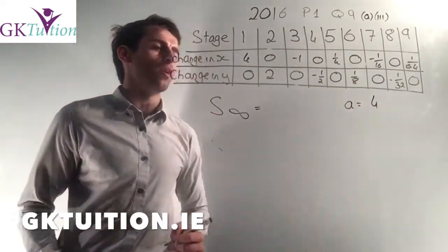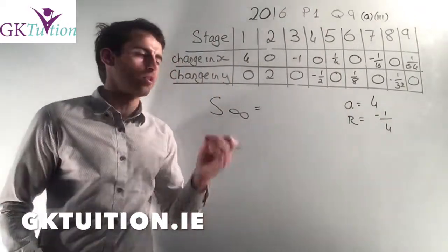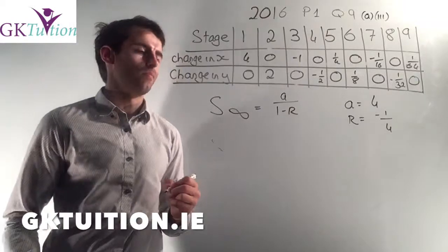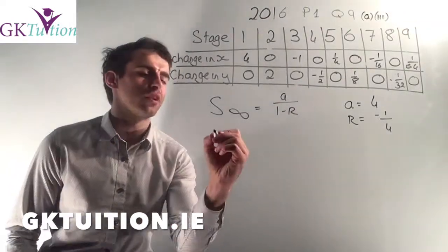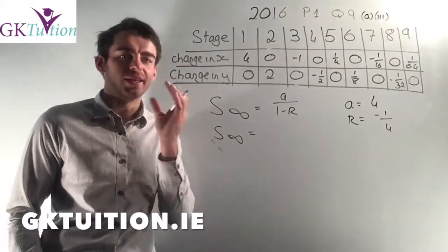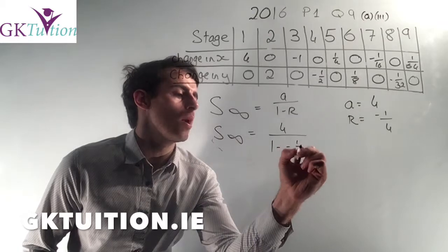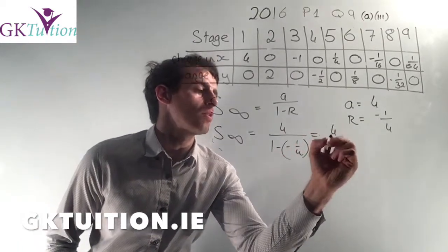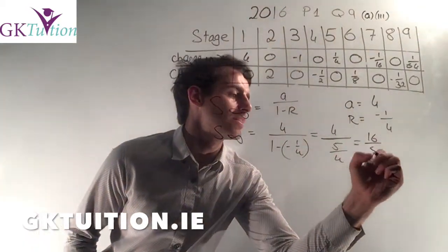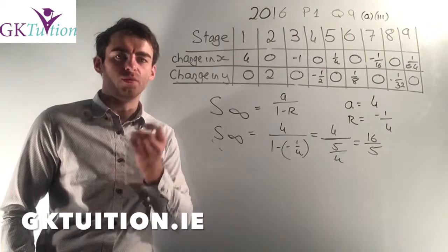For the horizontal movements, my first term A is 4, and my common ratio is one term divided by the previous term: minus 1 divided by 4 gives minus a quarter. The sum to infinity is A over 1 minus R. I know my A and I know my R, so the x value will be 4 over 1 minus (minus a quarter), which is 4 over 5 over 4. Plugging that into the calculator gives 16 over 5. So if this pattern continues indefinitely, the x value will be 16 over 5.